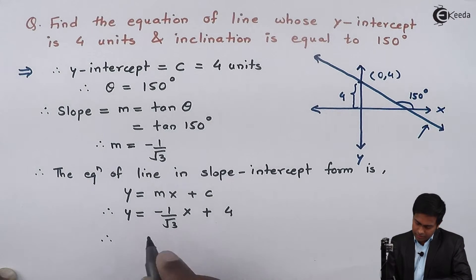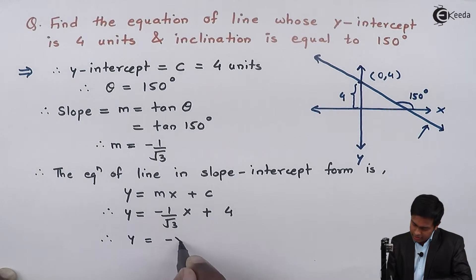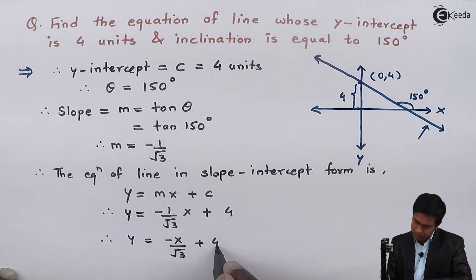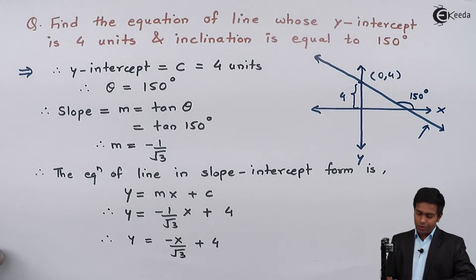So here we'll get y = -x/√3 + 4. Now to remove root 3 from the denominator, I will multiply this whole equation throughout by √3.